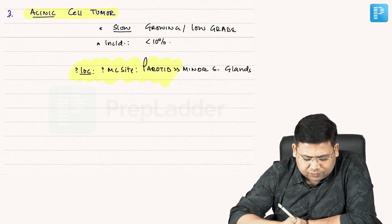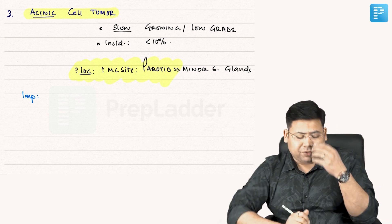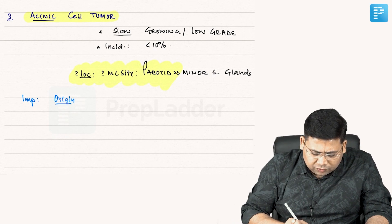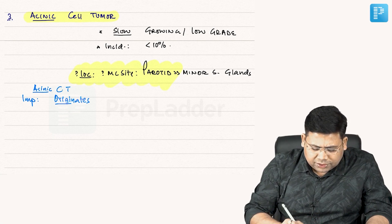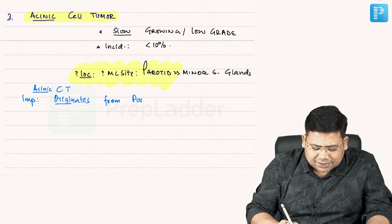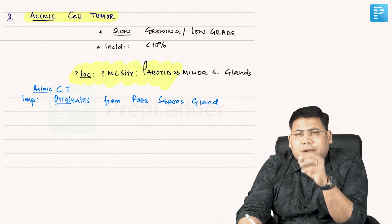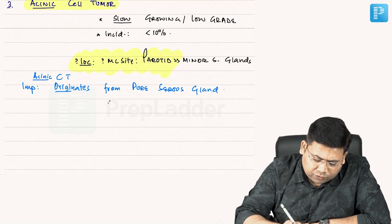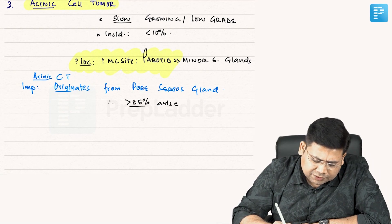What is the USP? What is so important about this tumor? Acinic cell tumor originates from pure serous glands. It is only the parotid, and except parotid we have few minor salivary glands which are actually serous. Therefore, more than 85% arise from the parotid.